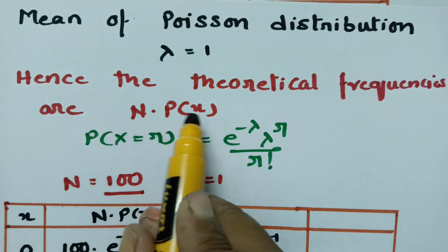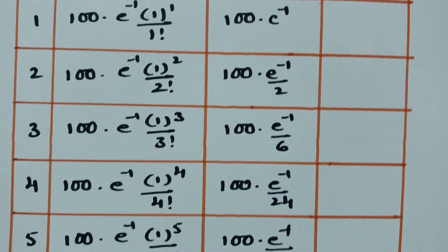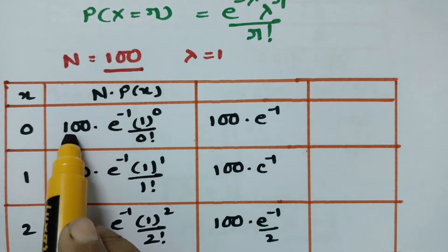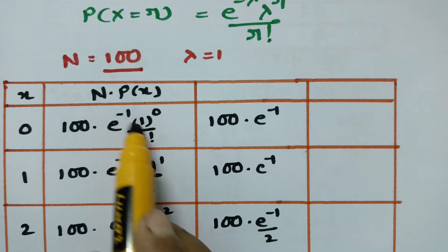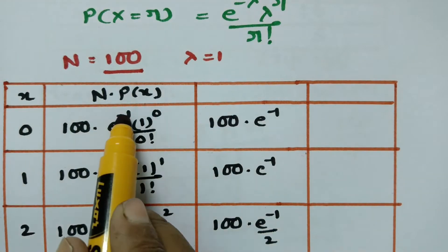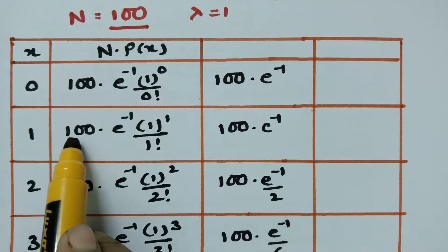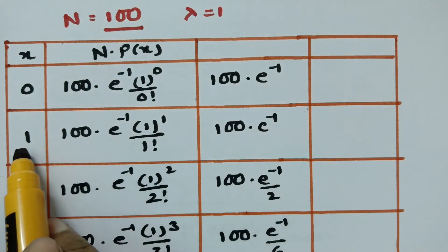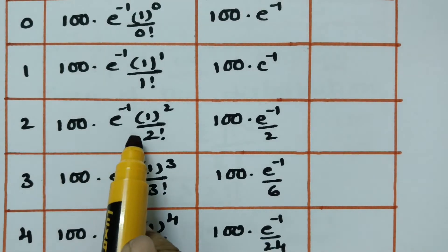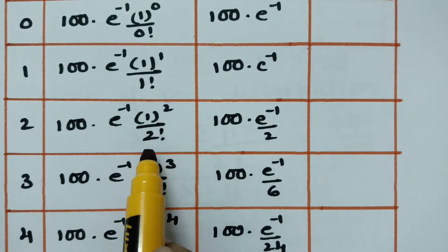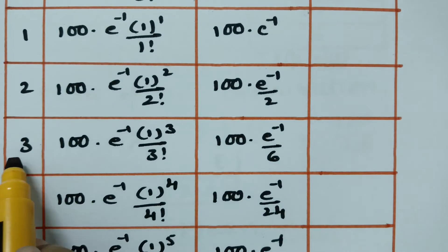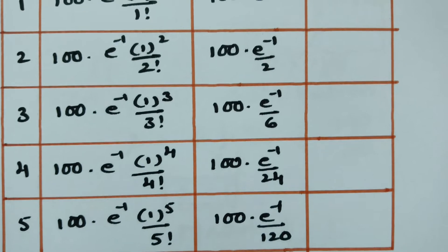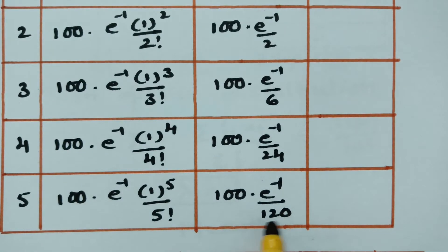We need the values of n into p(x) for all x values: 0, 1, 2, 3, 4, and 5. Substituting lambda equals 1 and n equals 100 into the formula 100 × e^(−lambda) × lambda^r / r! — for r = 0, r = 1, r = 2, r = 3, r = 4, and r = 5. For 5 factorial: 1×2×3×4×5 = 120. For 4 factorial: 24. For 3 factorial: 6. For 2 factorial: 2. For 1 factorial: 1. And 0 factorial is also 1.